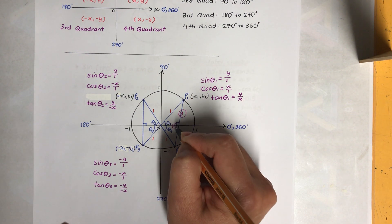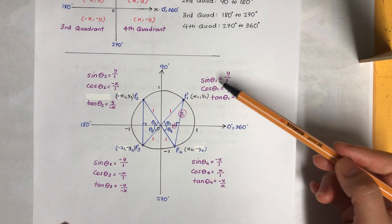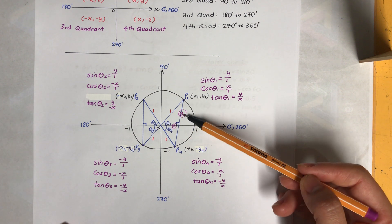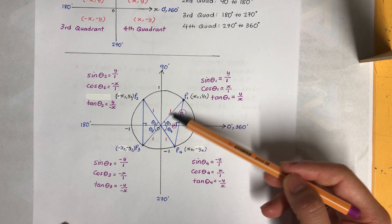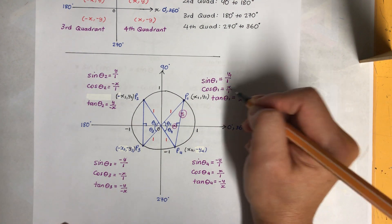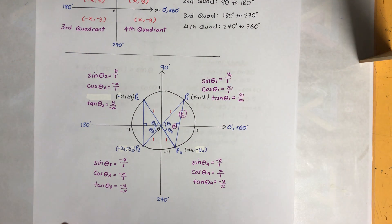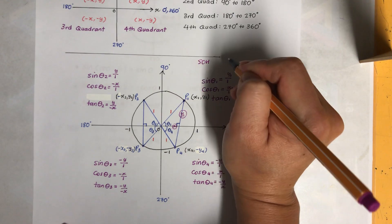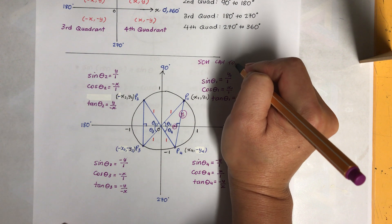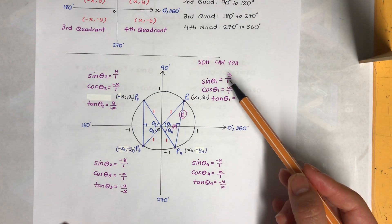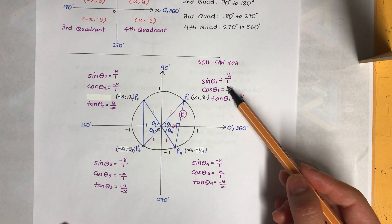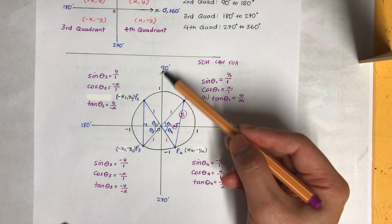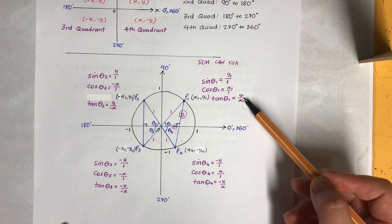Remember SOH CAH TOA. Here we have x1 and y1 as coordinates. Sine uses SOH, which is opposite over hypotenuse, so it'll be y1 over h. The hypotenuse h is one, so sine θ₁ = y1. As you can see, all values are positive — which makes sense because in the first quadrant all x and y values are positive, so all three trig ratios will be positive.